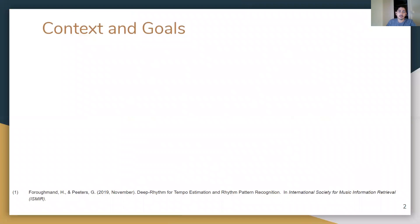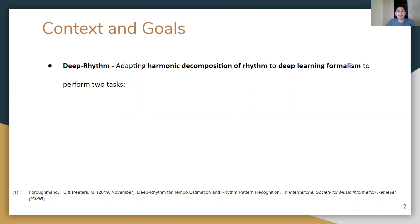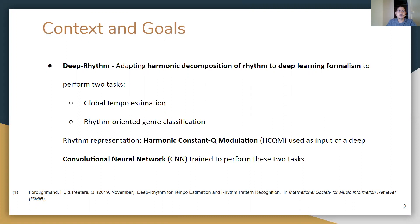The Deep Prism method was published at ISMIR 2019. It aims to adapt a harmonic decomposition of rhythm to a deep learning formalization in order to perform two tasks: global tempo estimation and rhythm-oriented genre classification. To achieve this, we developed a new representation — the harmonic constant Q modulation — used as input of a deep convolutional neural network. In our new paper we want to extend this method.